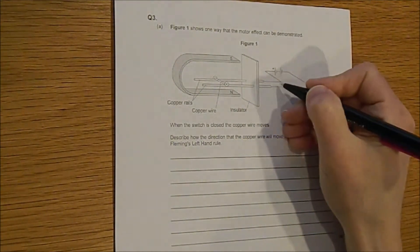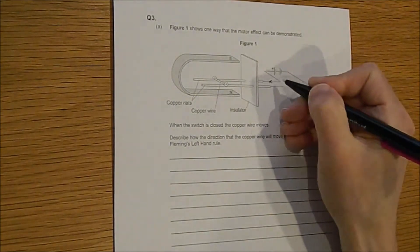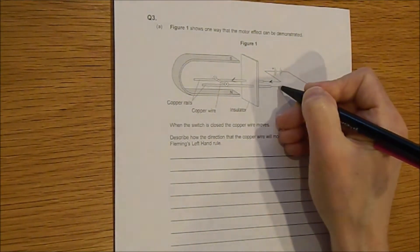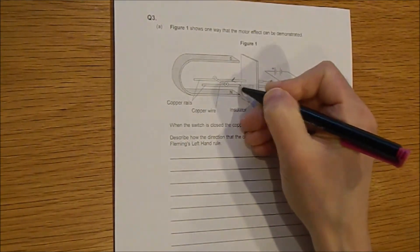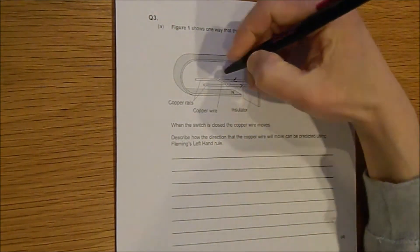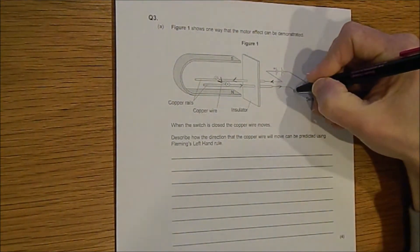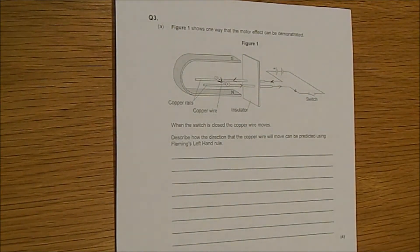There's nothing to stop you adding on some arrows here. So let's do that. So we've got the current flowing and actually the current is going to flow in this direction here. And that's going to be useful to us.